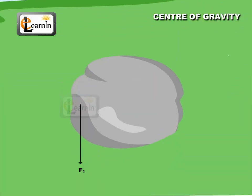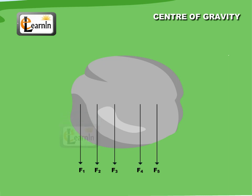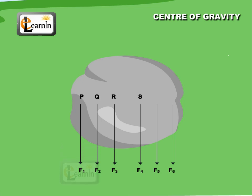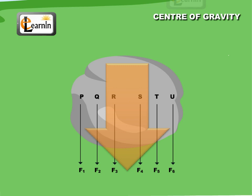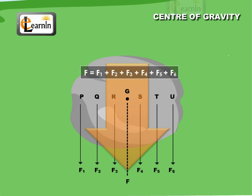Let F1, F2, F3, F4, F5, and F6 be the forces acting on the particles P, Q, R, S, T, and U respectively. The resultant of all these forces is equal to their vector sum, given by F = F1 + F2 + F3 + F4 + F5 + F6.